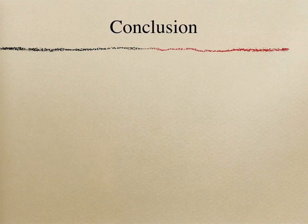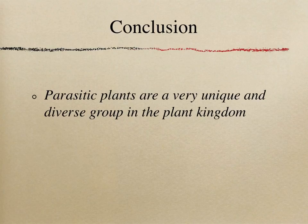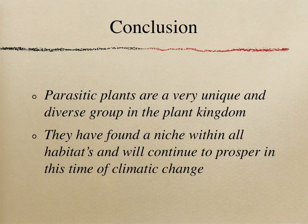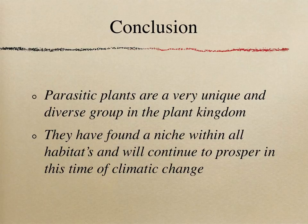In conclusion, we have found parasitic plants to be a unique and diverse group within the plant kingdom. They have developed a specialized form of propagation and nutrient retrieval. This system has allowed them to find a niche within most, if not all, forms of habitat on earth and allows them to be flexible with any changes that may occur to their respective habitats. It is this ability to adapt that has allowed such a wide variety of parasitic plants to appear throughout the plant kingdom, and it is why we believe they will continue to be successful in these times of climatic change.